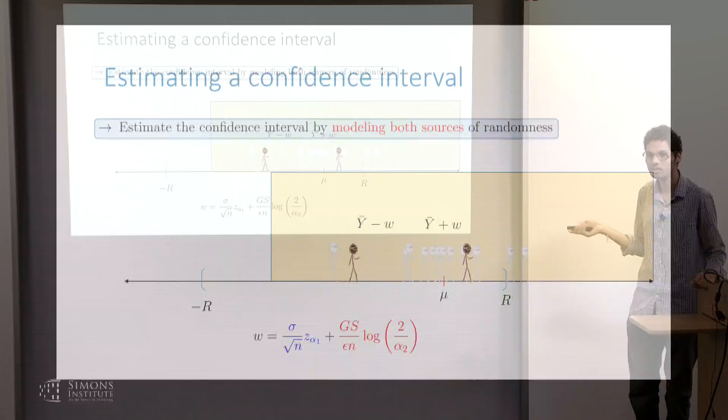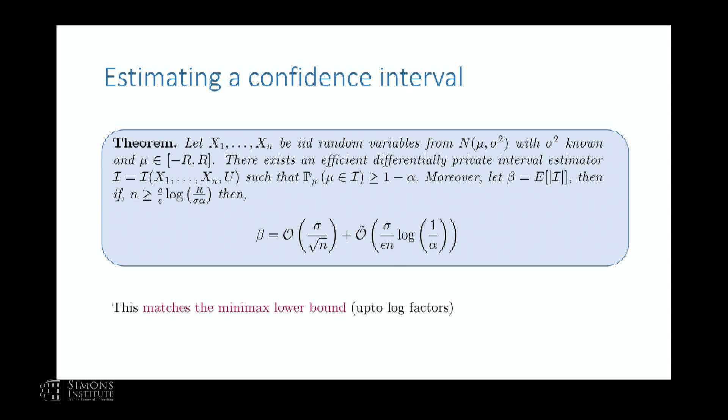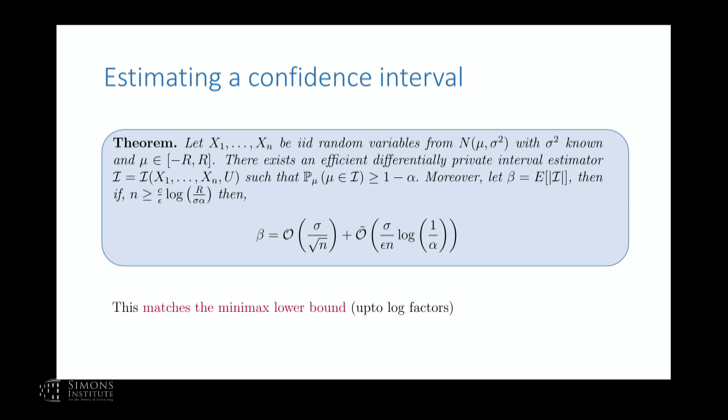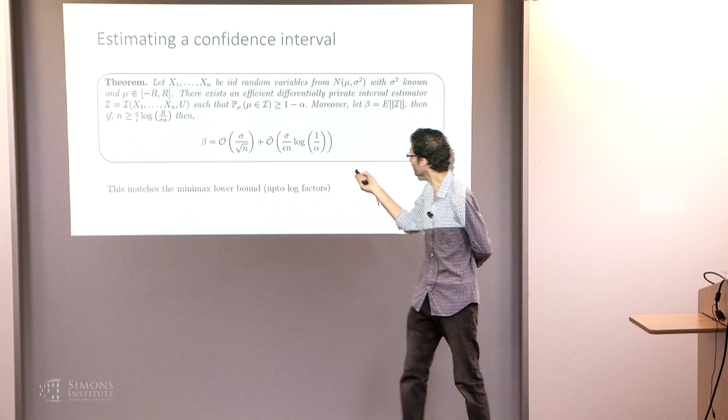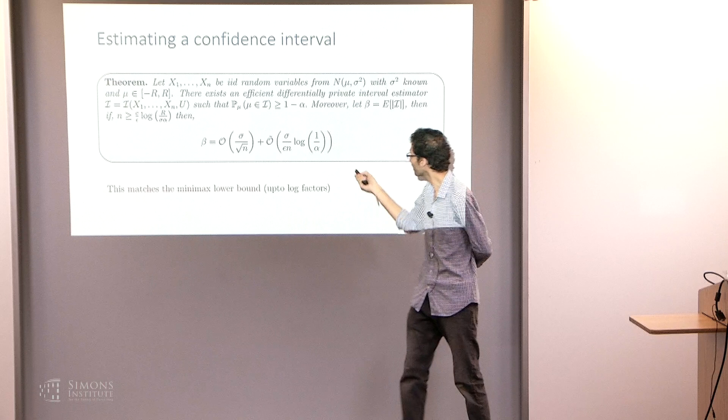The length of the confidence interval from this algorithm is roughly sigma/sqrt(n) plus sigma/(epsilon*n) * log(1/alpha), ignoring constants. This matches the minimax lower bound up to logarithmic factors — the O-tilde is hiding log n terms. So the dependence on alpha in the second term is logarithmic, which is made explicit here.